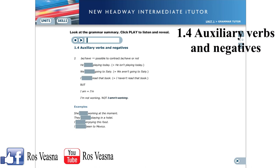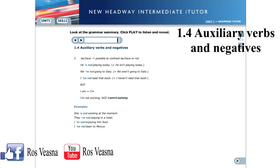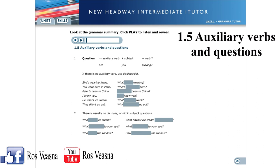With the auxiliaries be and have, we can contract be and have, or the not. He's not playing today / He isn't playing today. We're not going to Italy / We aren't going to Italy. I've not read that book / I haven't read that book. But we only have one negative form for I am — we say: I'm not working. Here are some more examples: She's not working at the moment. They're not staying in a hotel. I'm not enjoying this food. I've not been to Mexico.